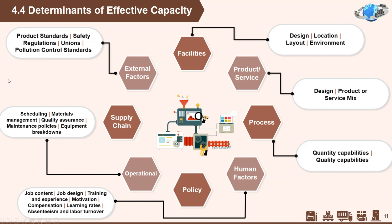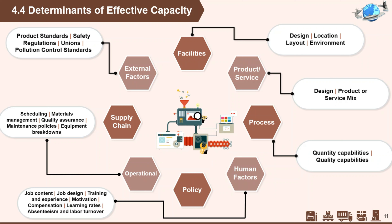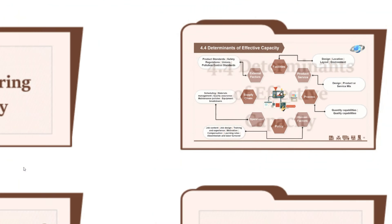Lastly, external factors. Product standards, especially minimum quality and performance standards, can restrict management's options for increasing and using capacity. Pollution standards on products and equipment often reduce effective capacity, as does paperwork required by government regulatory agencies, which engages employees in non-productive activities. A similar effect occurs when a union contract limits the number of hours and type of work an employee may do.